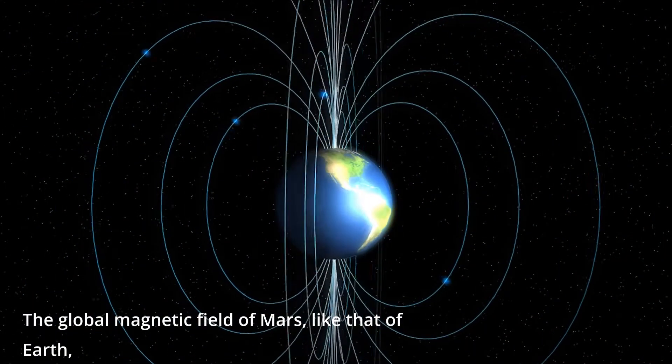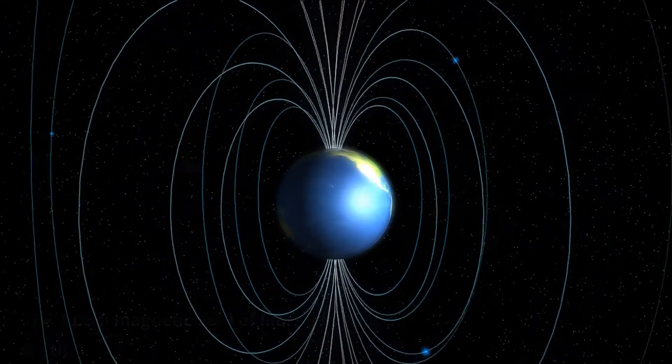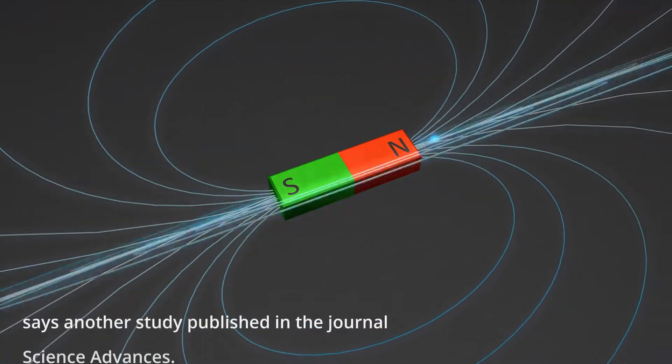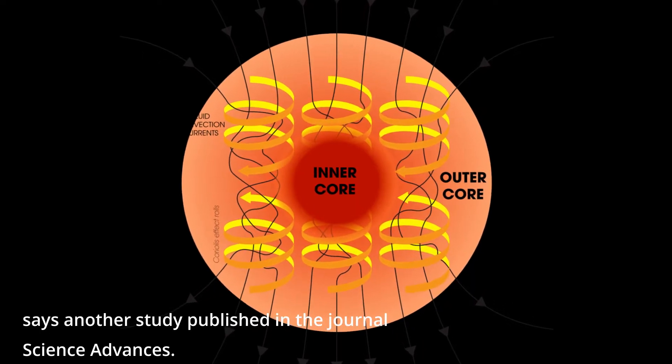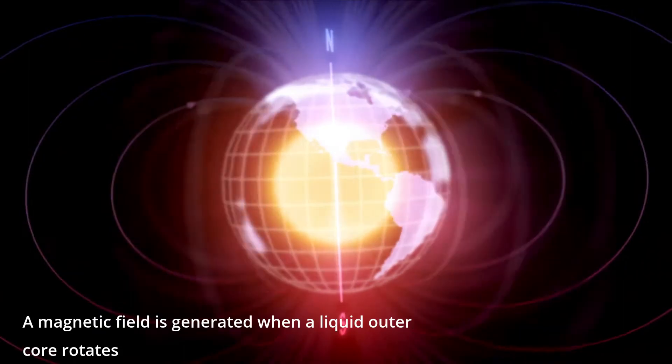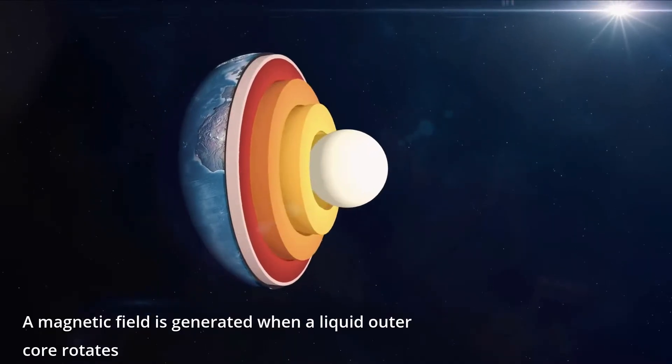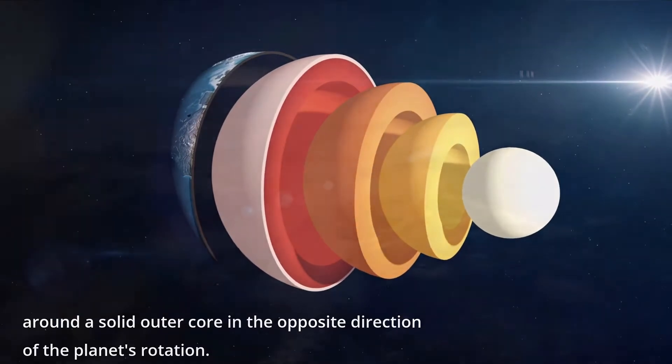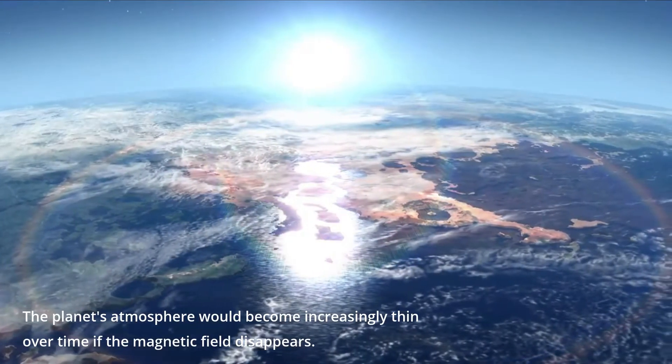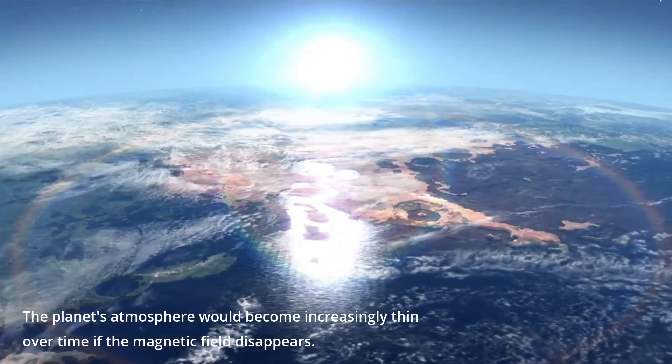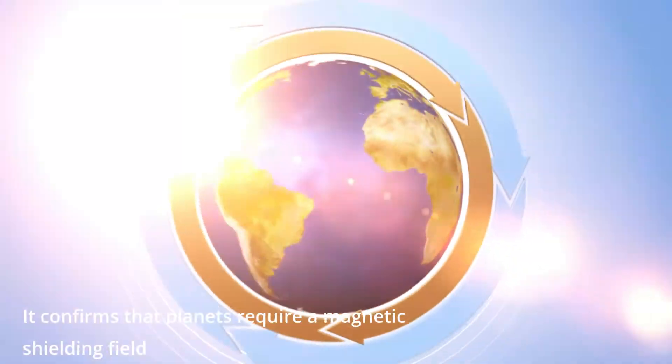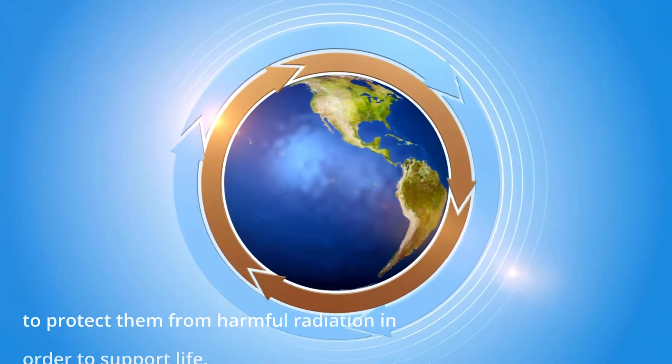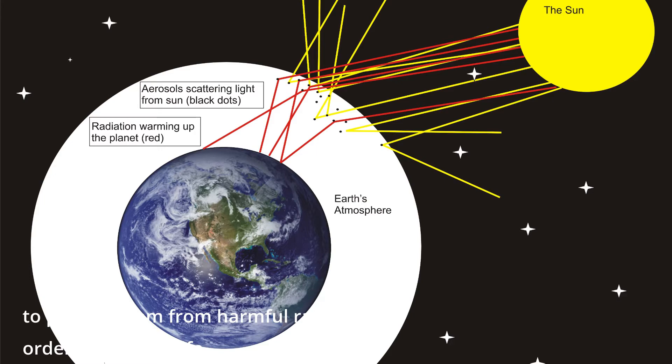The global magnetic field of Mars, like that of Earth, is assumed to be the result of a dynamo effect triggered by movement in its core, says another study published in the journal Science Advances. A magnetic field is generated when a liquid outer core rotates around a solid outer core in the opposite direction of the planet's rotation. The planet's atmosphere would become increasingly thin over time if the magnetic field disappears. It confirms that planets require a magnetic shielding field to protect them from harmful radiation in order to support life.